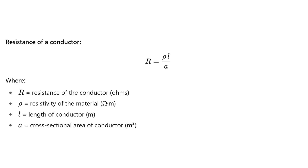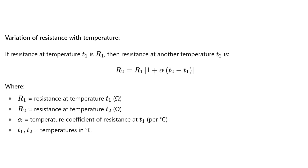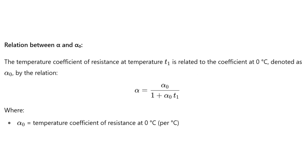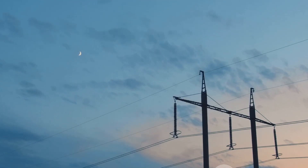But resistance is not fixed — it changes with temperature. If we denote resistance at temperature T1 as R1 and at temperature T2 as R2, then R2 equals R1 multiplied by (1 + α × (T2 − T1)), where α is the temperature coefficient, which itself is obtained from the coefficient at zero degrees Celsius. As the temperature rises, resistance increases almost linearly. That is why transmission lines heat up more on a hot day or under heavy load.